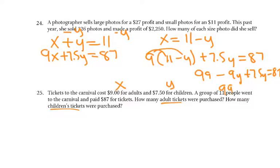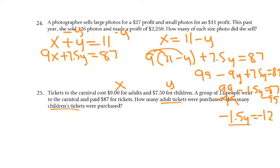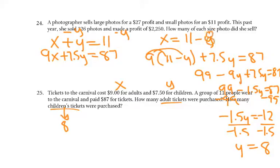So 99 minus 1.5y equals 87, because negative 9 plus 7.5 is negative 1.5. So negative 1.5y equals 87 minus 99, which is negative 12. Divide by negative 1.5, and we get positive 8. So y stands for children's tickets — we sold 8 children's tickets. If we sold 8 children's tickets, 11 minus 8 means we sold 3 adult tickets.